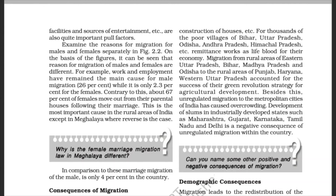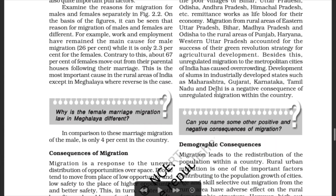Besides this, unregulated migration to metropolitan cities of India has caused overcrowding. Development of slums in industrially developed states such as Maharashtra, Gujarat, Karnataka, Tamil Nadu, and Delhi is a negative consequence of unregulated migration within the country.